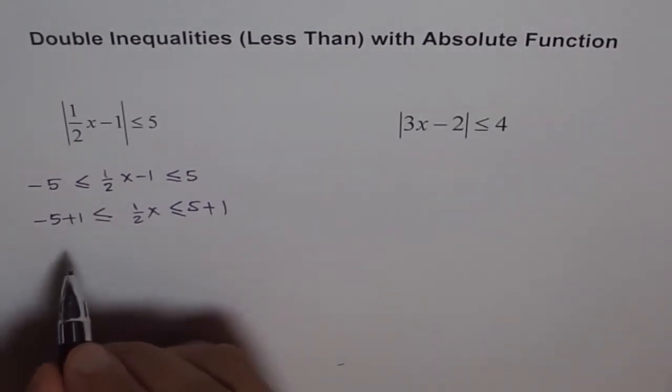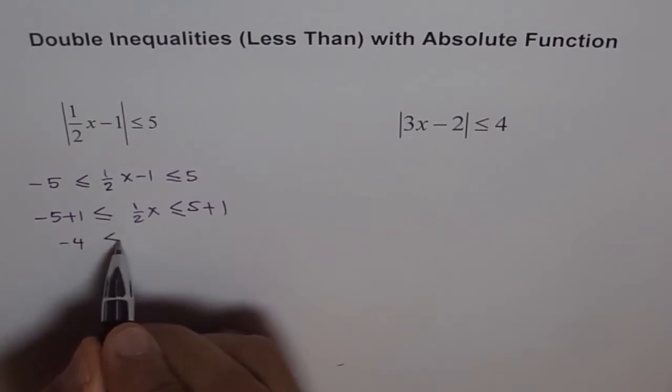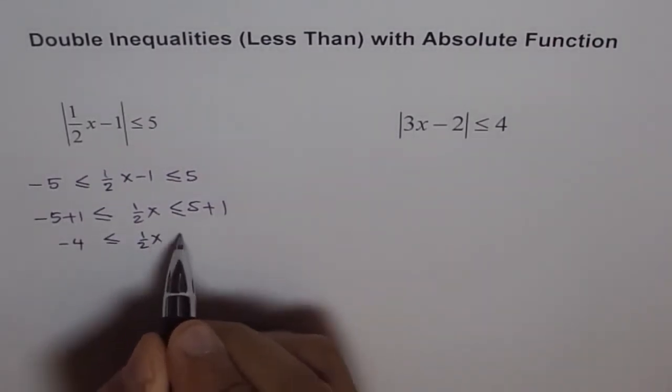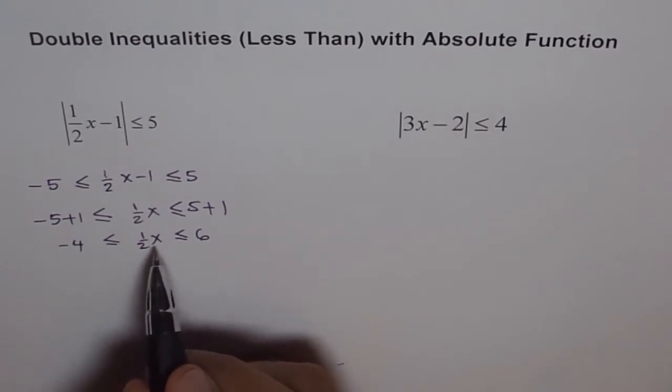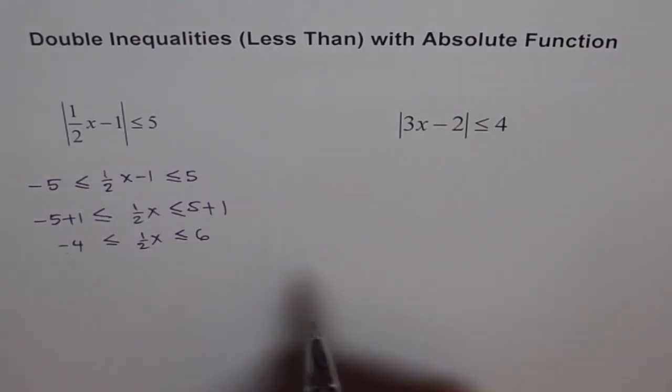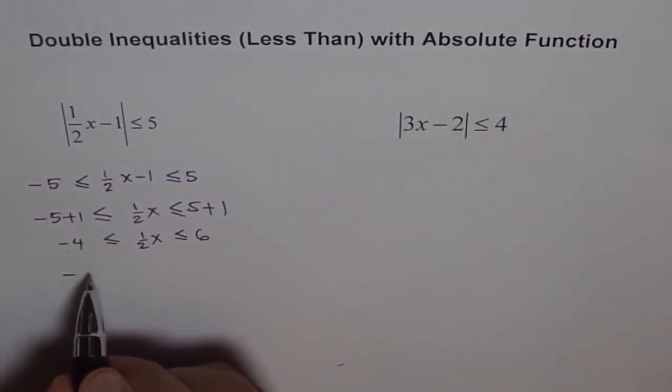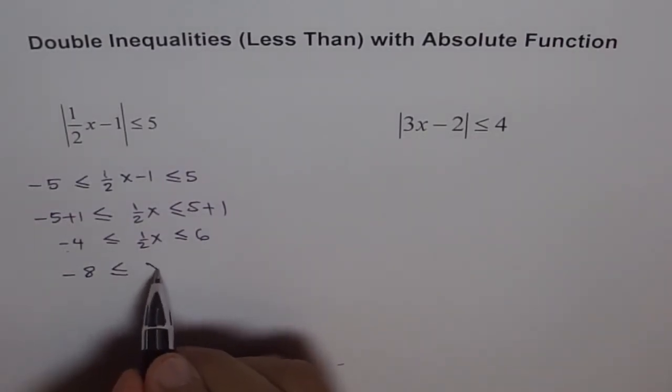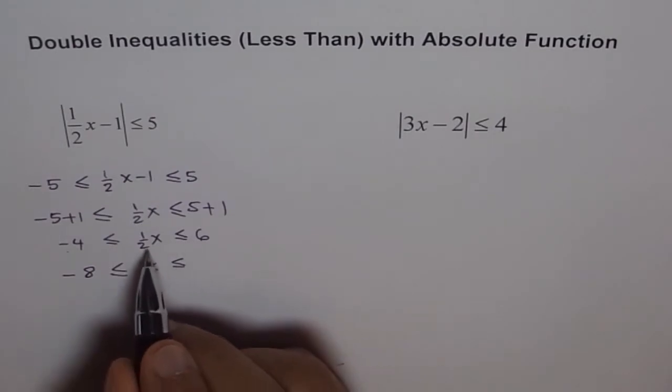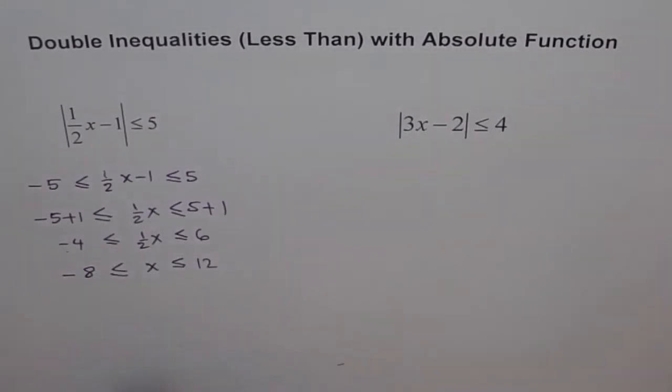So, minus 5 plus 1 is minus 4 is less than or equal to half x is less than or equal to 6. Now, to get x, we need to multiply everything by 2. So, we say minus 4 times 2 is 8 is less than or equal to x is less than or equal to 6 times 2 is 12. Therefore, our solution is that x is within minus 8 and 12. That's the solution.